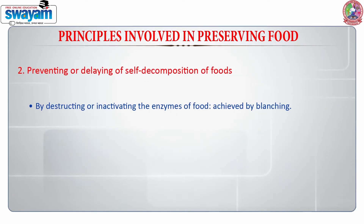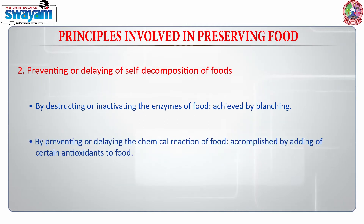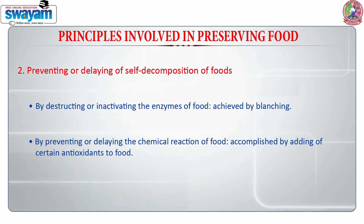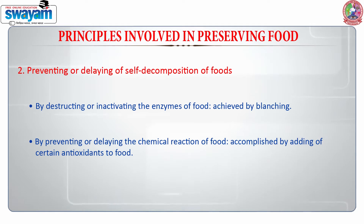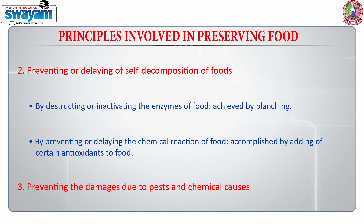Preservation can also be achieved by destroying or inactivating the enzymes of food through blanching, and by preventing or delaying chemical reactions in food by adding certain antioxidants. The last principle involves preventing damage due to pest and chemical causes.